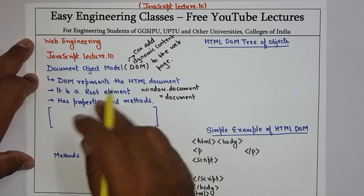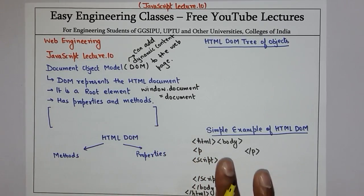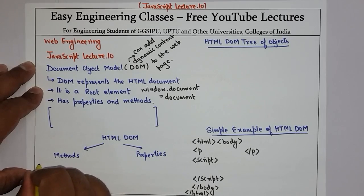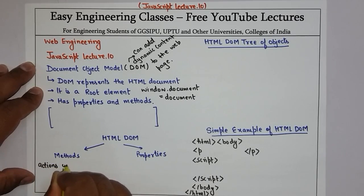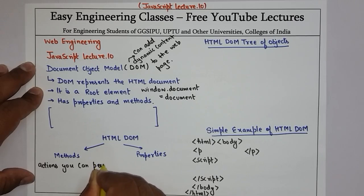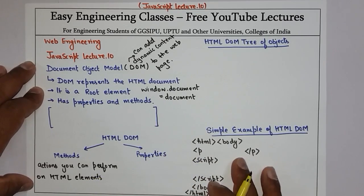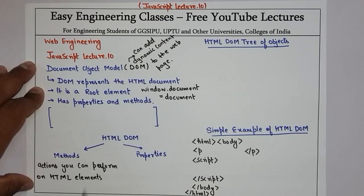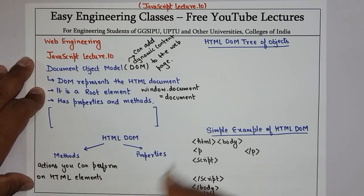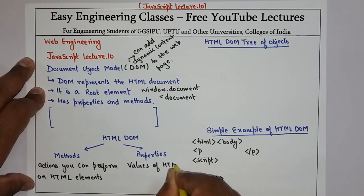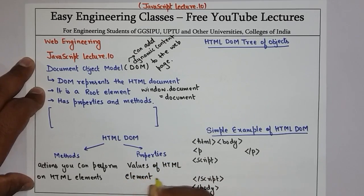DOM is a root element and has properties and methods. इसकी different properties और different methods हैं। Methods क्या होते हैं — methods are the actions that you can perform on HTML elements। और जो properties होती हैं, these are the values of HTML elements that you can set। HTML elements की values जिसको हम set कर सकते हैं, उसको हम कहते हैं properties।